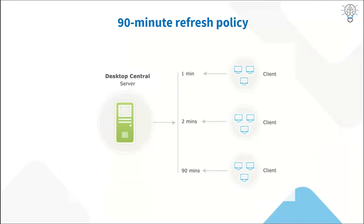The 90-minute refresh policy is how Desktop Central scales across small and large networks. Every agent communicates with the Desktop Central server once every 90 minutes. Whether you have 90 or 9,000 machines, the 90 minutes is divided among them and each machine is assigned a specific time slot to communicate with the server. This avoids network congestion and bandwidth issues — the load is split evenly across all clients.